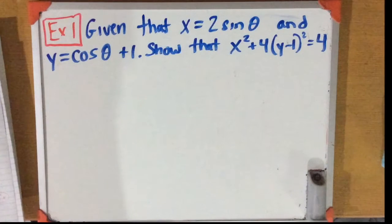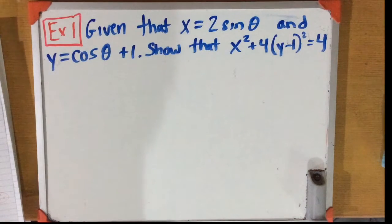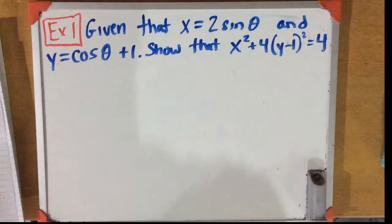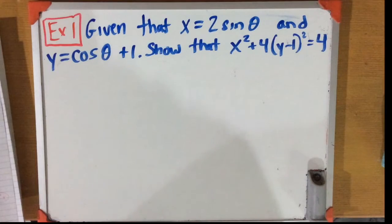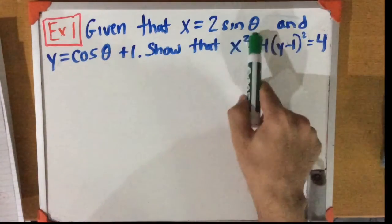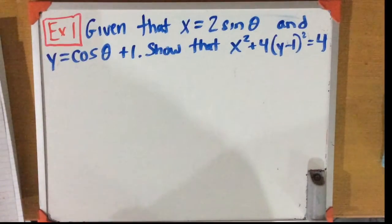All right, example one. Example one says: given that x is equal to 2 sine theta, and y is equal to cosine theta plus 1, show that x squared plus 4 times (y minus 1) squared is equal to 4. To help us out here, we're going to use one of the trig identities we just talked about. It's a good idea to know what sine theta and cosine theta are individually.